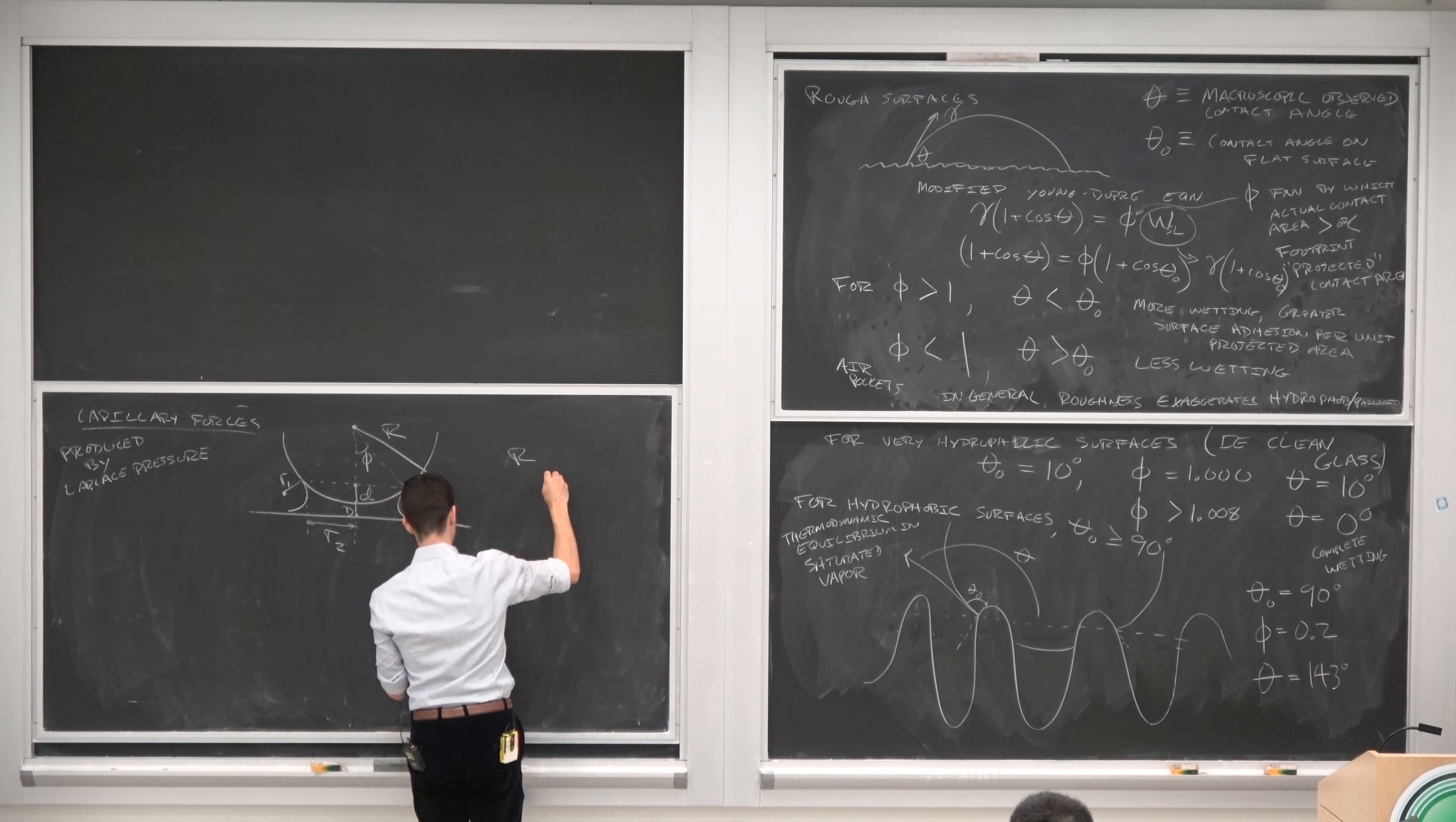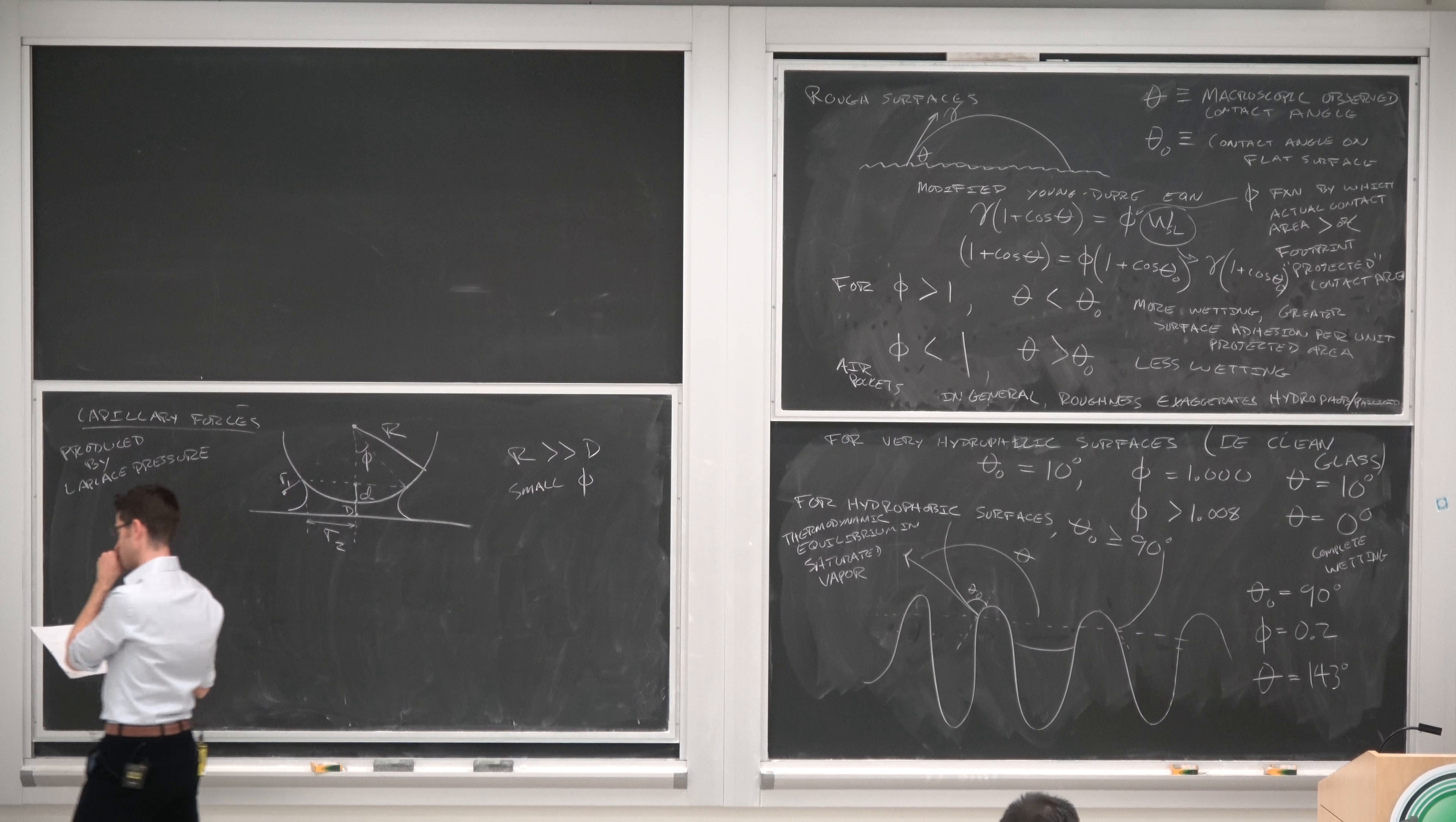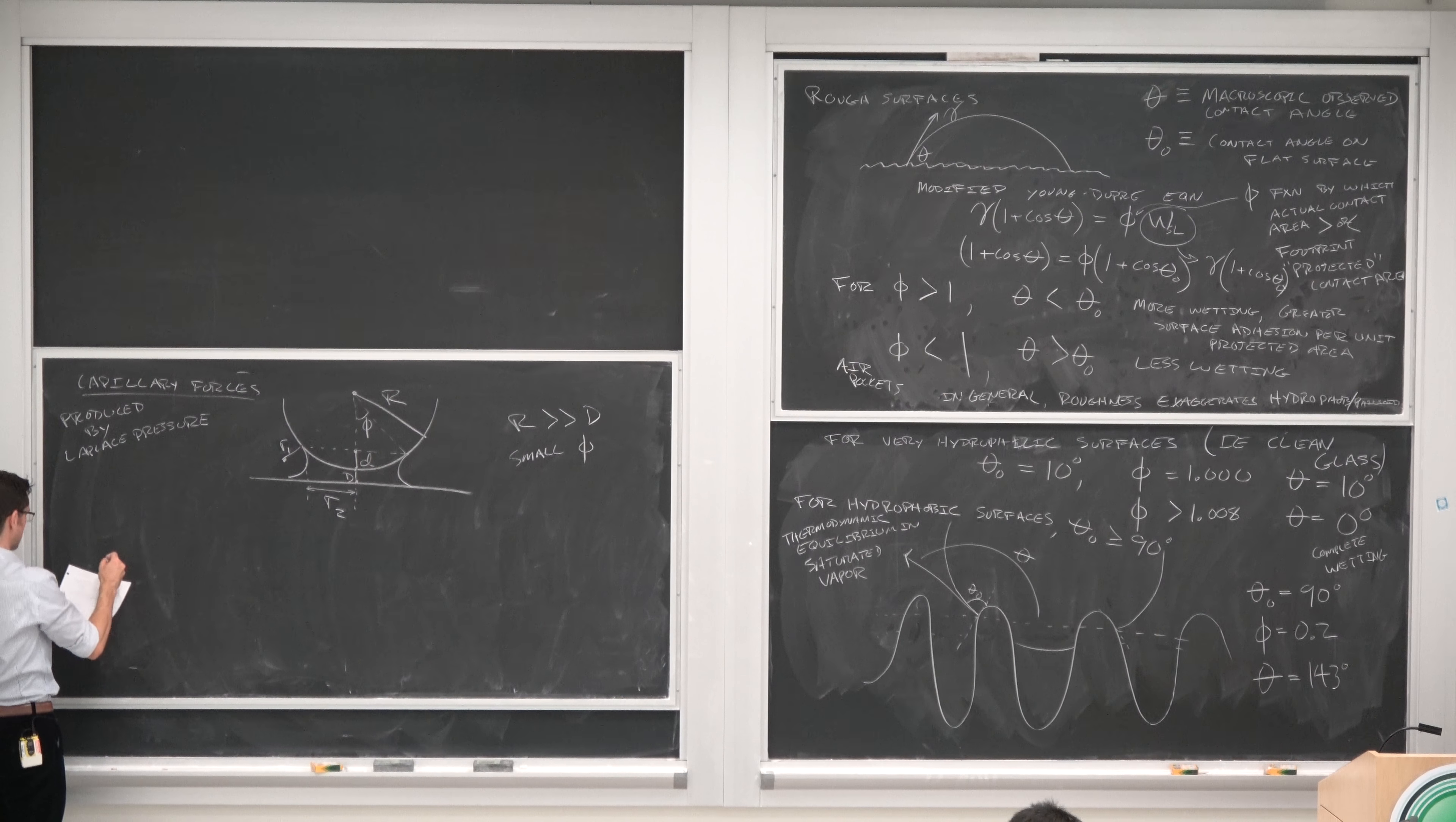And this is the condition where R is much greater than D and small phis. We're not going to derive this, but we will derive it for any small distance, or we'll show it for any small distance and then just show you what it is for surfaces in contact.